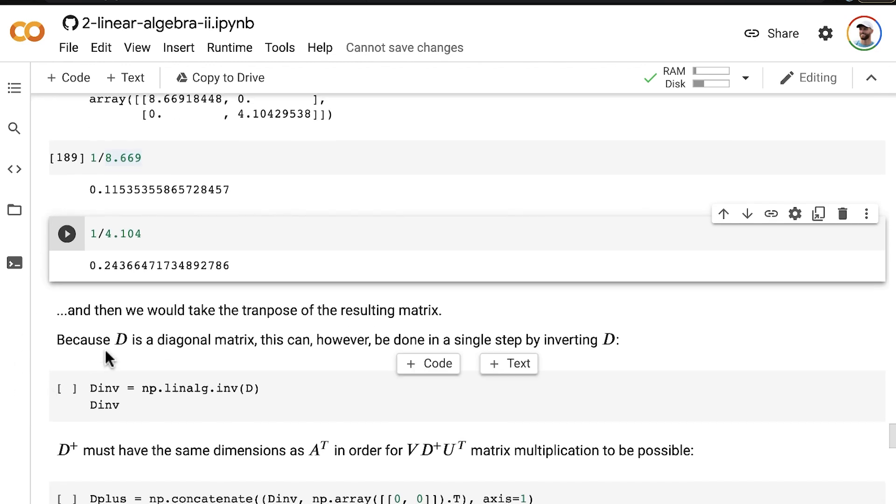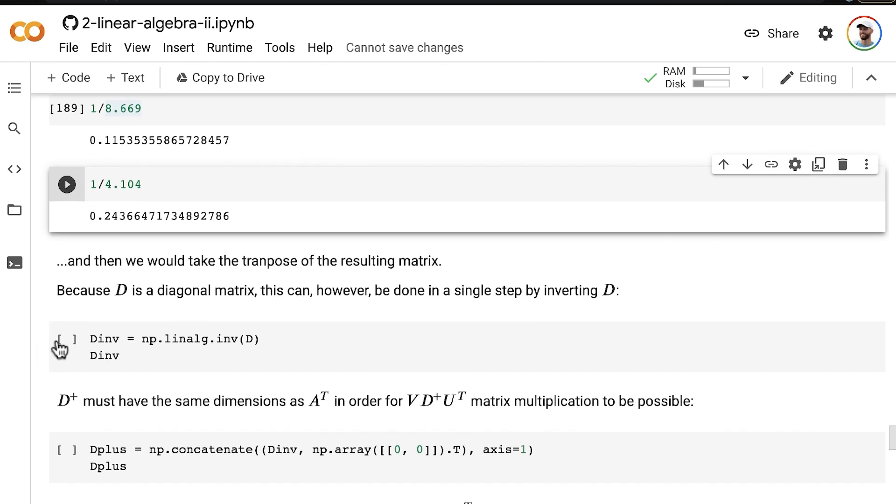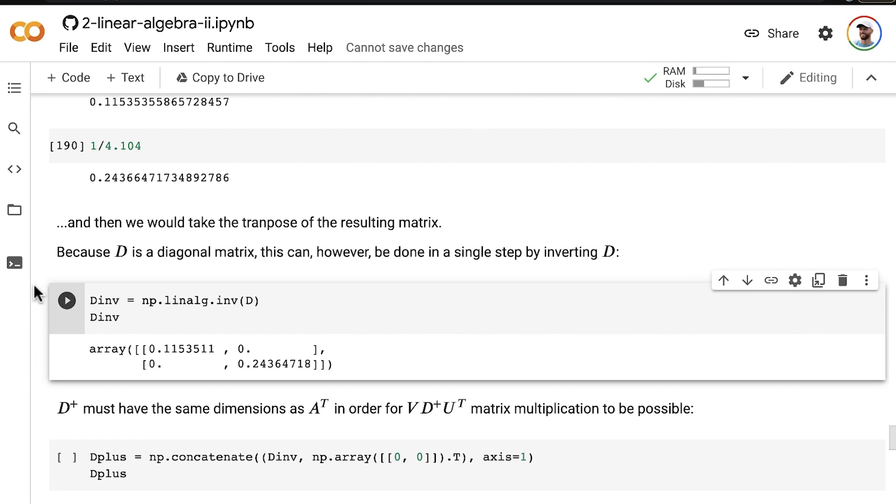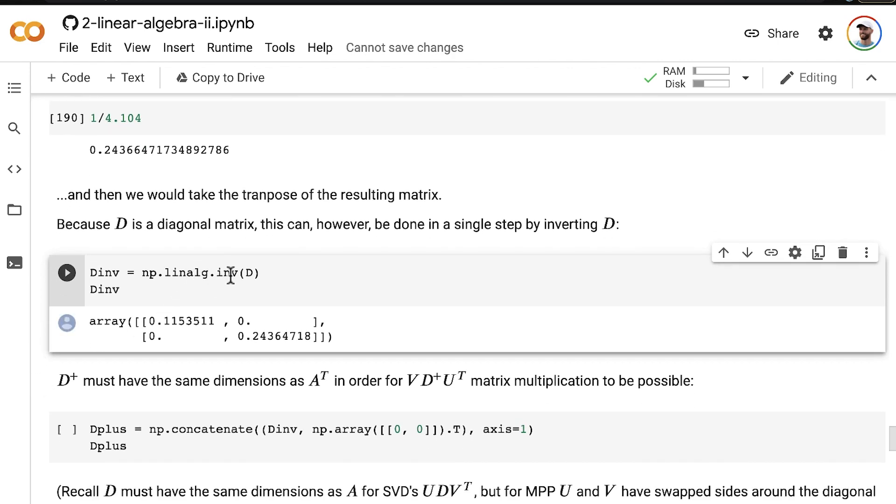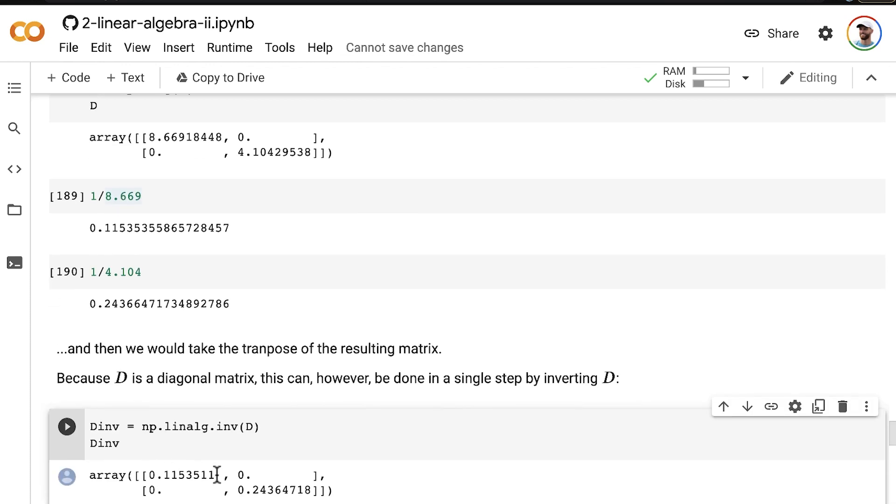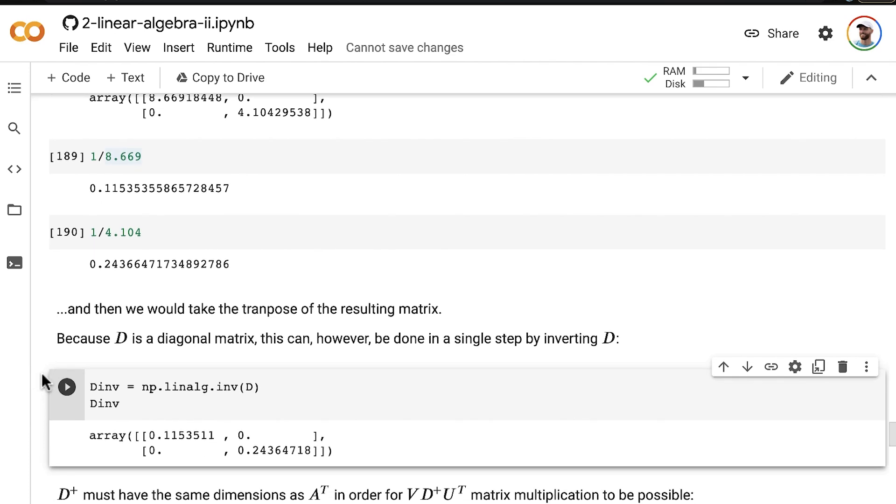However, because D is a diagonal matrix, we can do this in a single step by inverting D. Simply passing our matrix D into the NumPy inverse method, it automatically inverts the non-zero values here along the main diagonal. So, 8.669 inverted becomes 0.115, just as when we did it manually. And same thing for the 4.1. When we inverted, it becomes 0.24. That's a little shortcut.